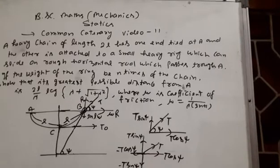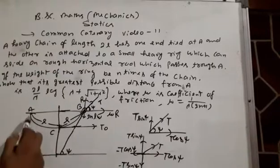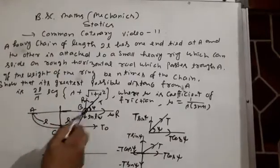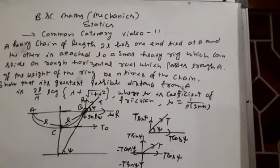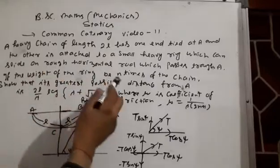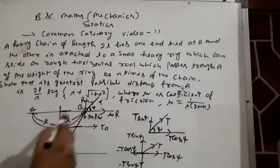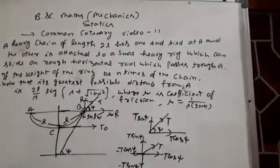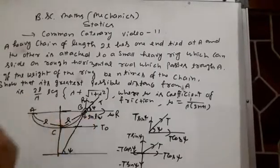This question involves a heavy chain of length 2L. The weight of the chain is W and its length is 2L. One end is tied at point A and the other end has a small heavy ring V. This is the horizontal road which passes through point A.